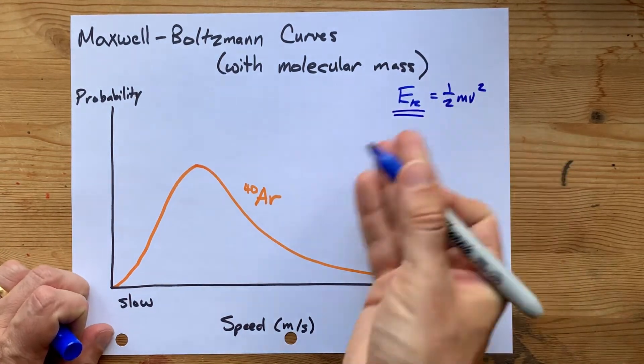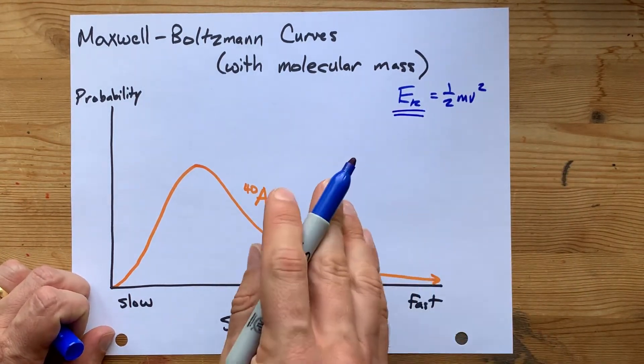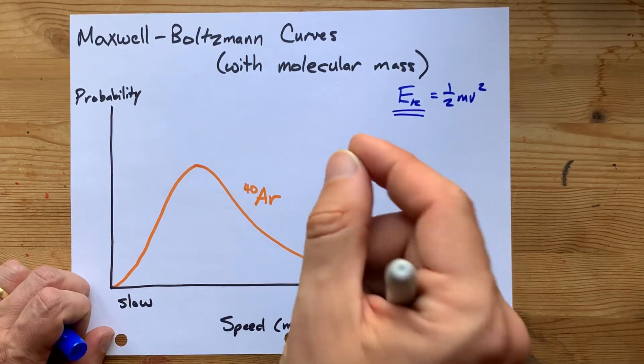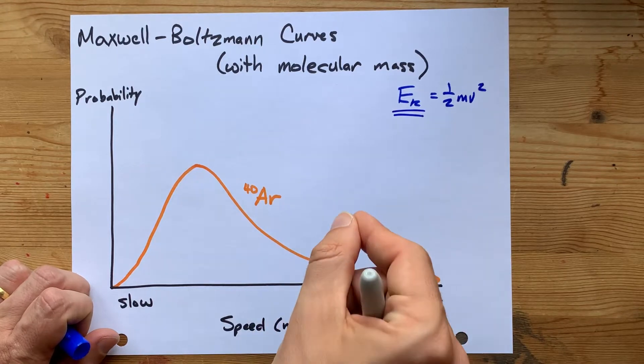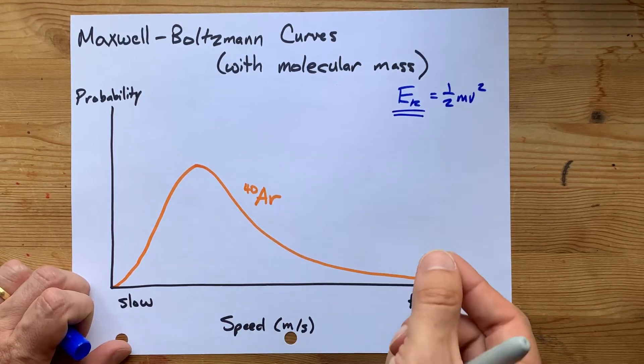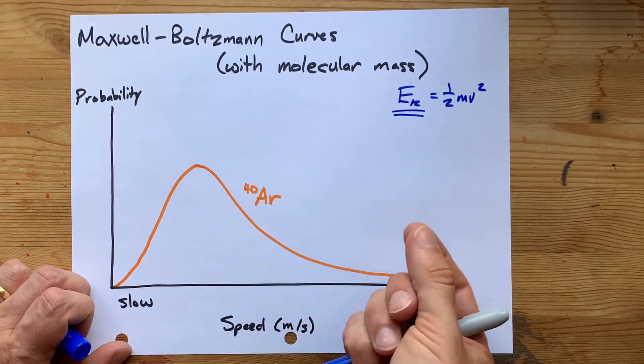Ek, kinetic energy of each particle, is constant, well, on average, at a specific temperature. And so if the temperatures are the same, the average kinetic energy of the particles is the same.